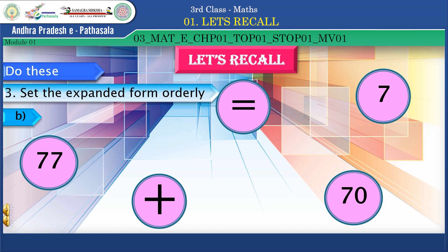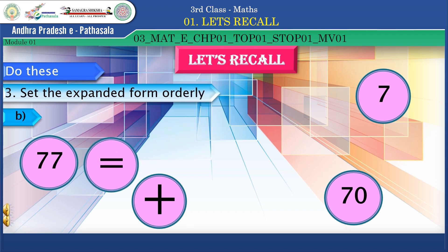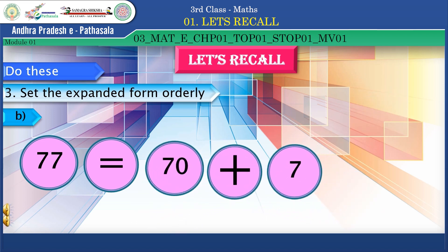Next: set the expanded form in order. Here one activity is there — set the expanded form orderly. The number is seventy-seven, equal to seventy plus seven. Children, you said it super! Clap yourself once again.